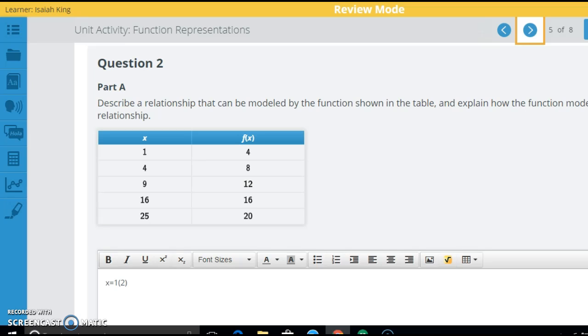Now, here's going to be the same thing. Describe a relationship that can be modeled. And so a real-world relationship where the x's are increasing. Now, these aren't increasing by 1. Look what's happening. We'll go 1, 4, 9, 16, 25. You can see that these are all perfect squares, right? 1 squared equals 1, 2 squared equals 4, 3 squared is 9, and so on. And these are increasing by 4. So think of something that when you square it over here, it increases by 4 here. You can come up with whatever example you want.